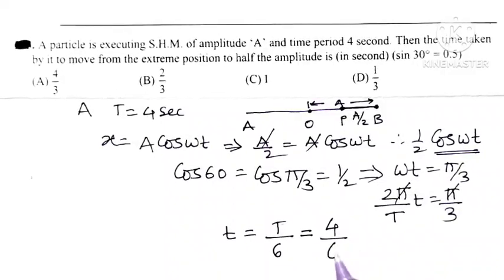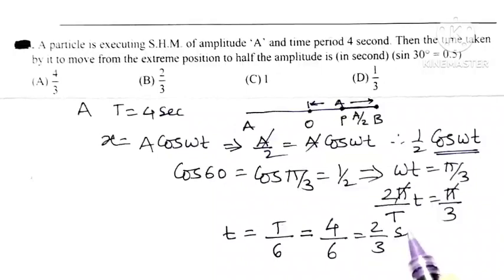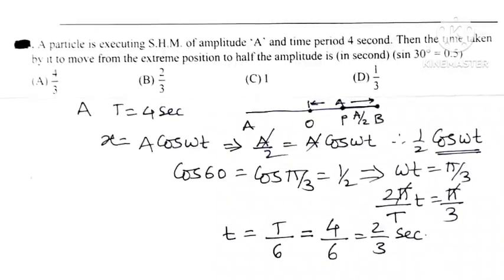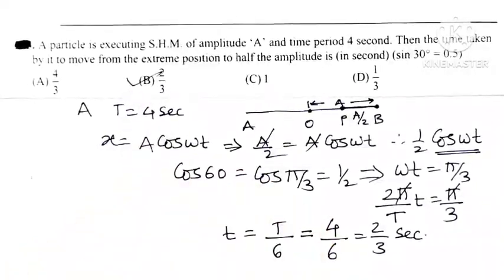4 divided by 6 means it is 2 divided by 3 seconds. So option B is the correct option for this question.